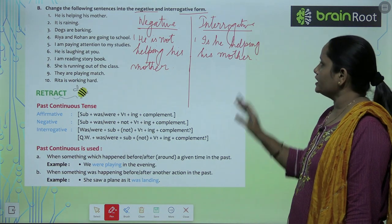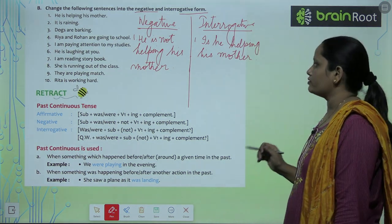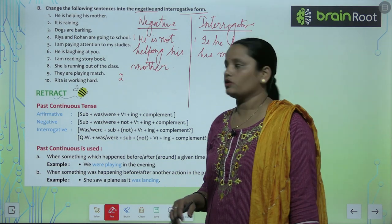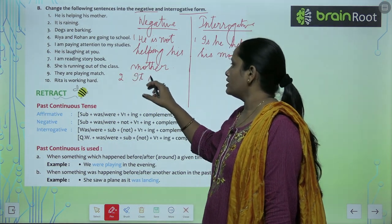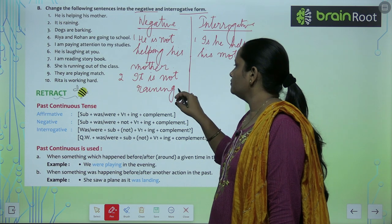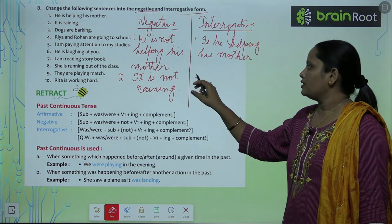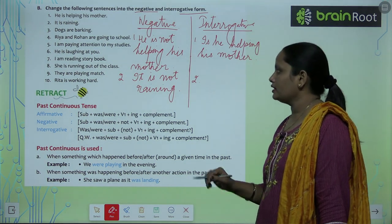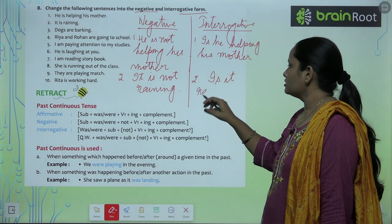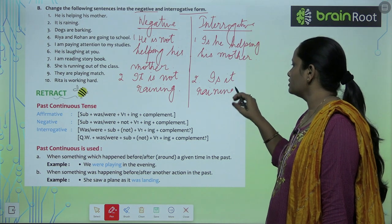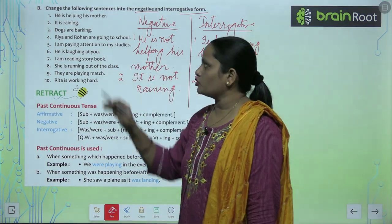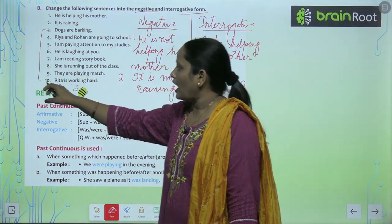So we have made the negative sentence and the interrogative sentence. The second one is 'It is raining.' Its negative is: 'It is not raining.' And the interrogative is: 'Is it raining?' Remember to put a question mark. Like this, children, you have to make the negative and interrogative sentences for the rest of the questions.